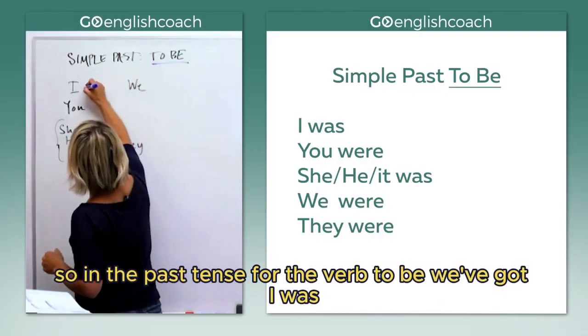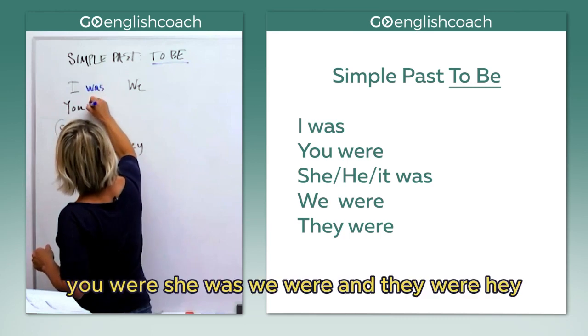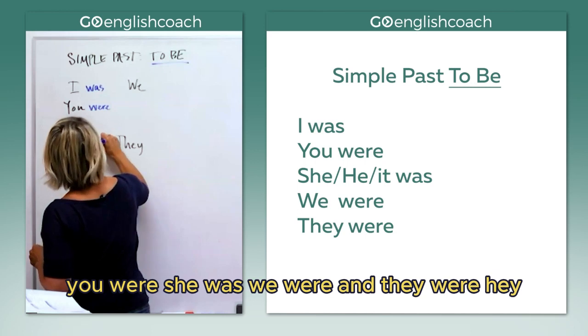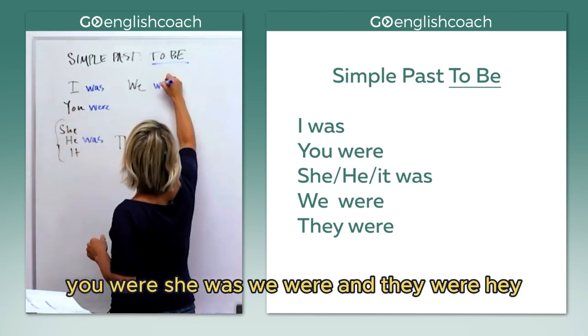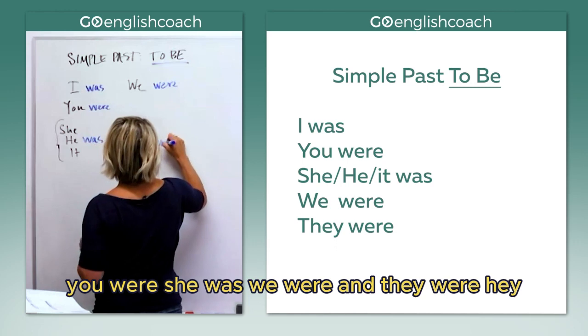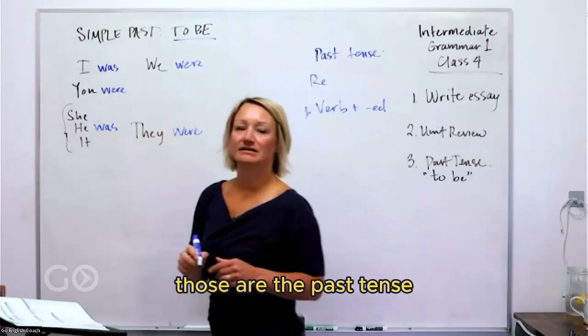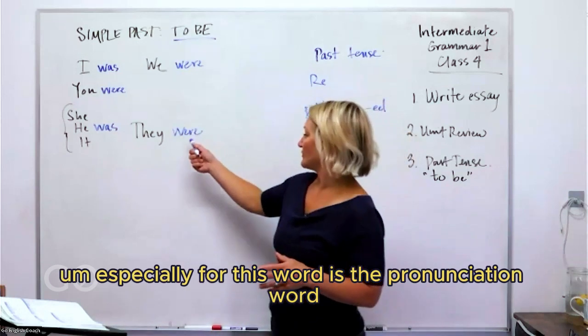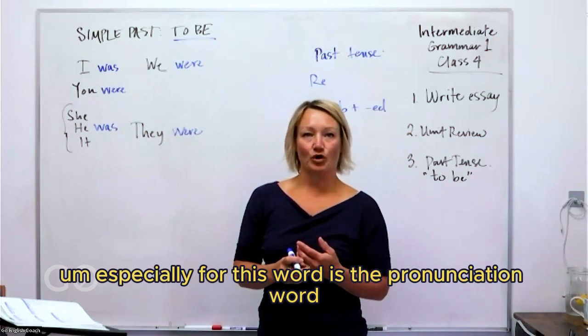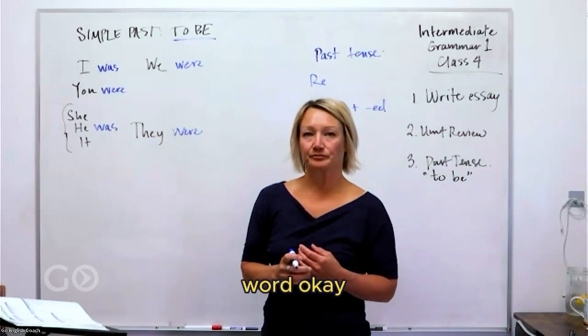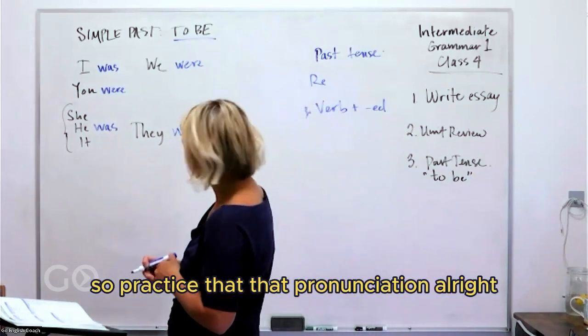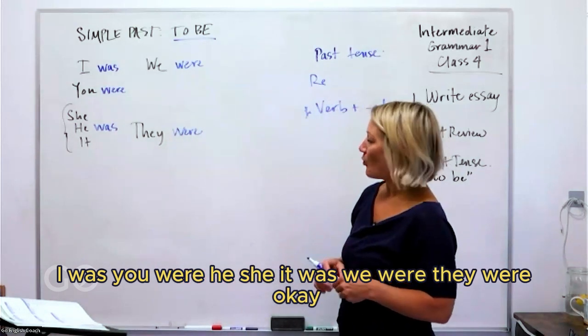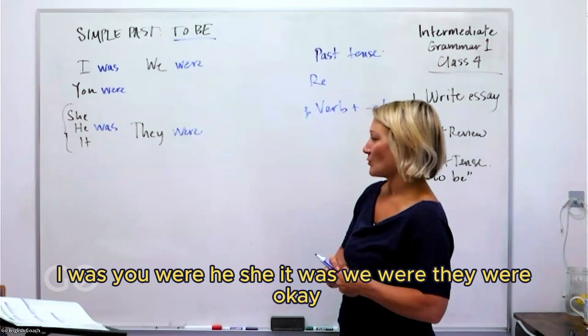In the past tense for the verb 'to be', we've got: I was, you were, she was, we were, and they were. Those are the past tense. Another really important aspect about those, especially for this word, is the pronunciation: were, were. So practice that pronunciation. I was, you were, he/she/it was, we were, they were.